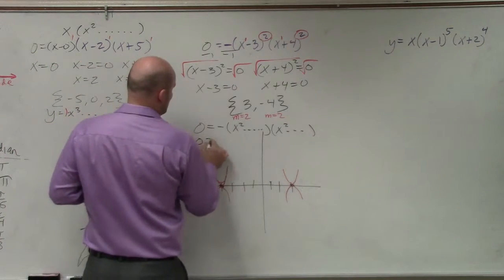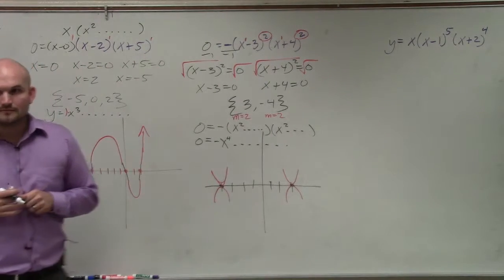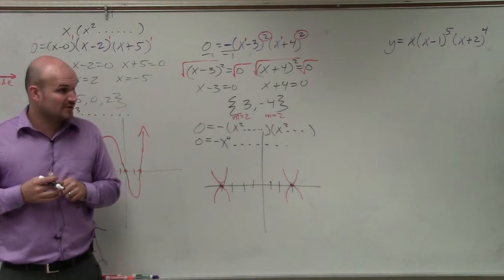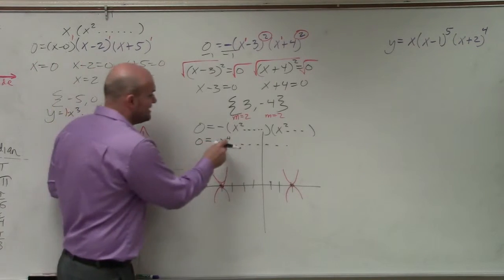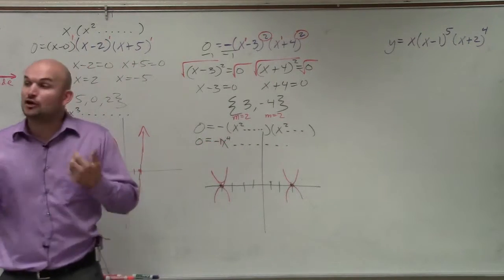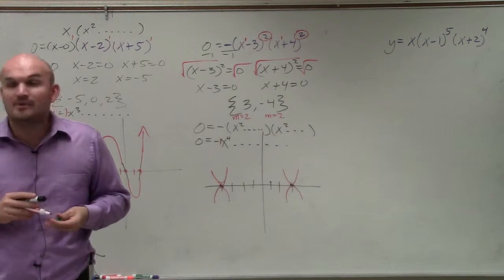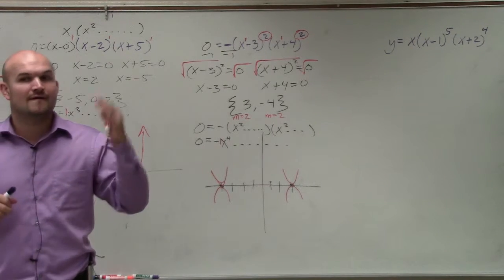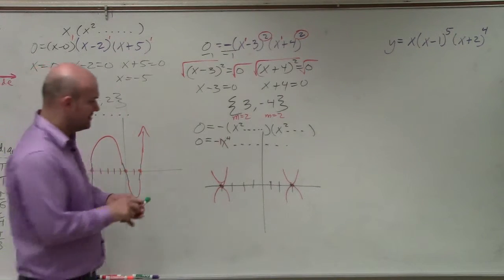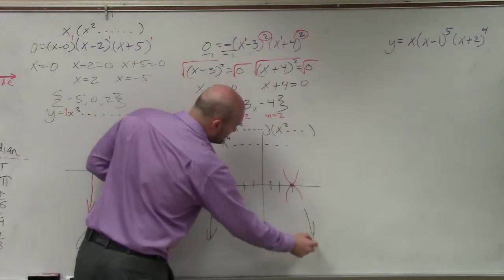So in reality, we really have negative x to the fourth. So now, we have x to the fourth, correct? And our leading coefficient, though, is now a negative 1. So now, we need to go back to our end behavior and say, OK, what happens when my degree is even, but my leading coefficient is negative? Now, what is the end behavior? Falls left, falls right. So the graph falls left and falls right.